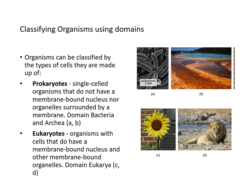Classifying organisms using domains is a relatively new concept. There are three types of domains: Domain Bacteria, Domain Archaea, and Domain Eukarya. Bacteria and Archaea are made up of single-celled prokaryotes — they don't have membrane-bound nuclei or organelles. Domain Eukarya contains organisms with cells that have membrane-bound nuclei and other membrane-bound organelles.